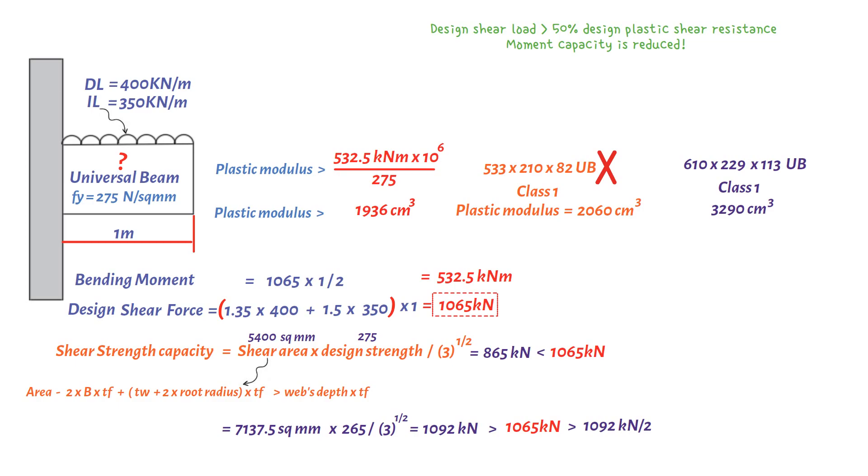The Eurocode recommends that where the design shear load exceeds 50% of the design plastic shear resistance, the bending resistance of cross sections should be calculated using a reduced yield strength, 1 minus rho, multiplied by the design strength of steel for the shear area only. The shear area of rolled sections with equal flanges is taken as the plastic modulus of the shear area of the section, equal the web thickness times the depth of the web squared divided by 4.